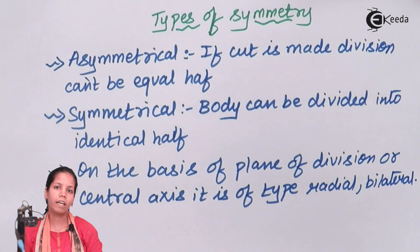Starfish is an example of radial symmetry, whereas humans are the case of bilateral symmetry. The axis is drawn and then the body gets divided into two equal halves.